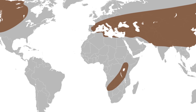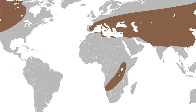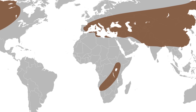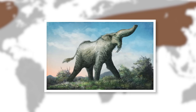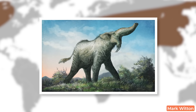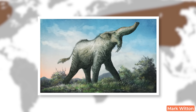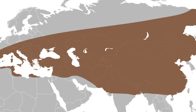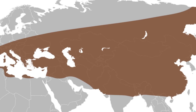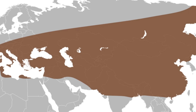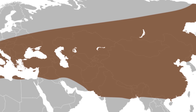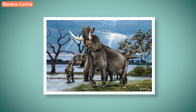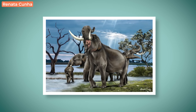Zygolophodon also had a pretty wide distribution. The early Miocene marked the connection of Africa to Asia, and as such, Proboscideans were able to migrate out of their homelands. Zygolophodon in particular managed to travel to Europe and Asia, reaching south, southeast, central, and east Asia as well. And Zygolophodon wouldn't be the only Mastodon to get this far into Asia.